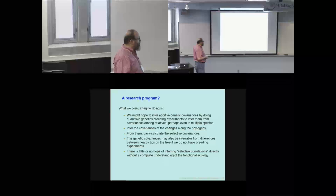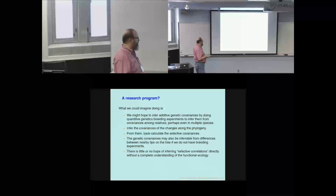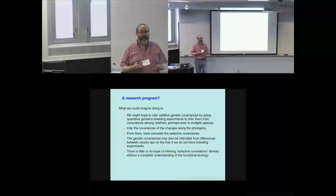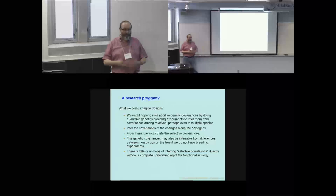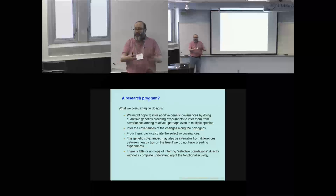I don't know of any more direct way of figuring out what the selective covariances are unless we have a very complete understanding of the way the ecology works and the way the characters interact with it — but there are these more indirect ways.